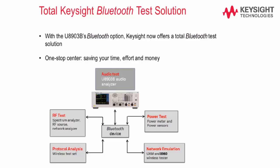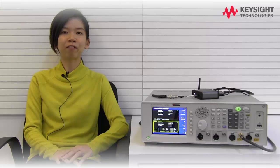With this one-stop solution, it will save your time, effort and money. The Keysight U8903B Performance Audio Analyzer with Bluetooth option allows you to make accurate, convenient and high performance Bluetooth audio testing. For more information, contact your sales representative or visit us on the web. Thank you for watching.